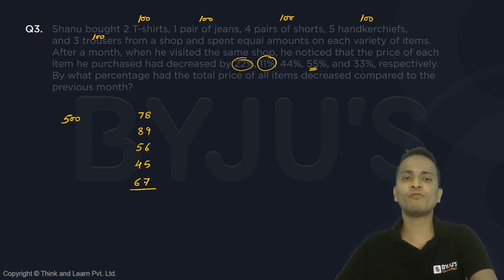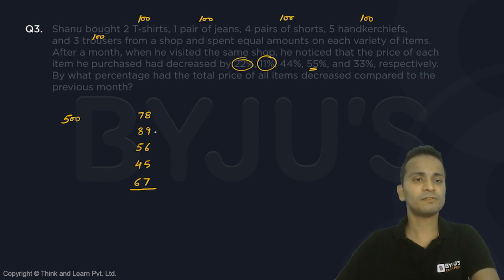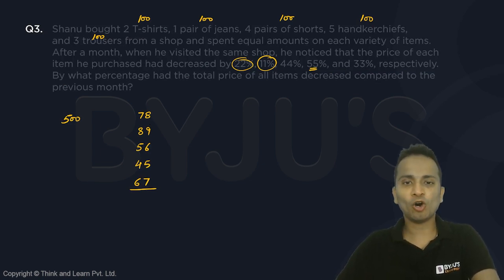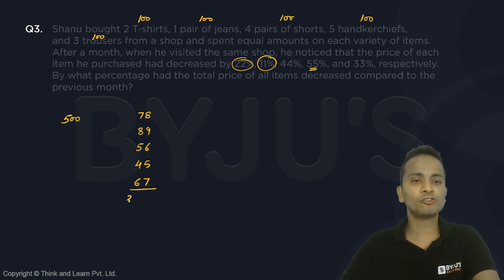This is the combined price of all these articles this month. Now adding them all up, you will get 335.